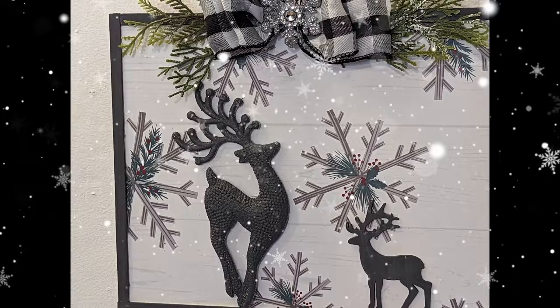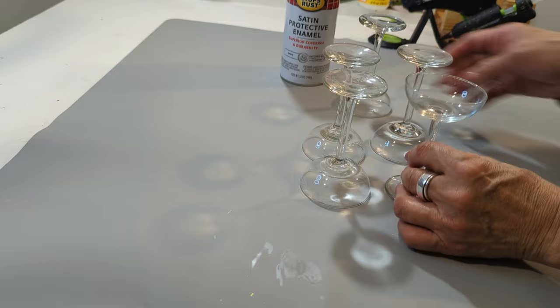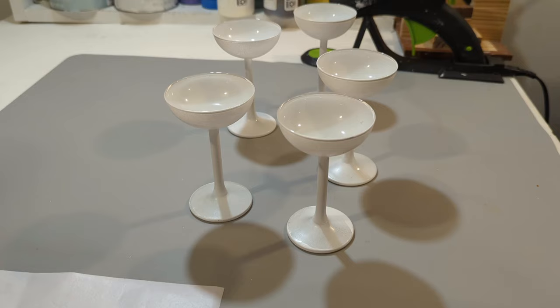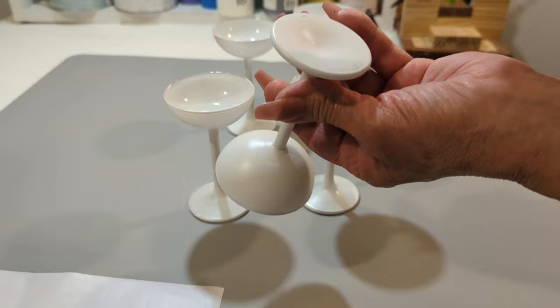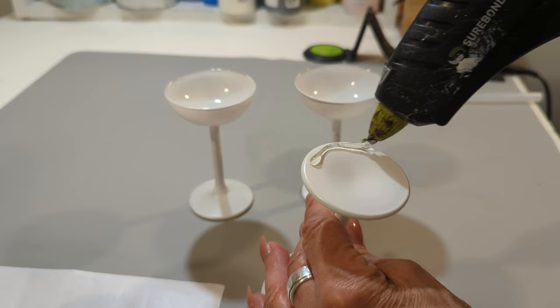I also purchased these glasses at the thrift store for 10 cents. I wish they would have had six, but they only have five. I'm going to go ahead and spray paint them with this white spray paint from Rustoleum. And I'll give it one coat. And they are all dry. These came out so pretty. I'm going to be using some hot glue and I'm going to be creating some candle holders. So I'm going to go ahead and glue two together. One on top of the other. And I'm going to do a set of two.